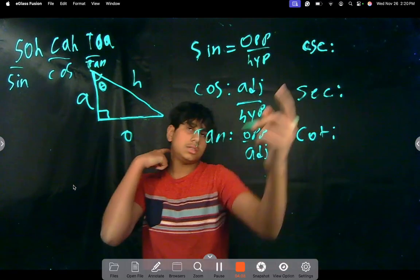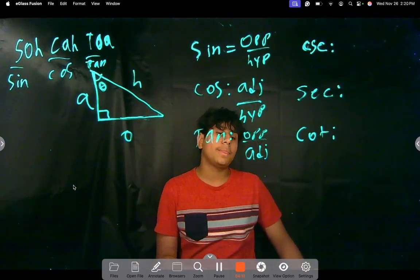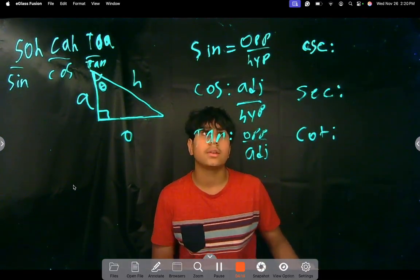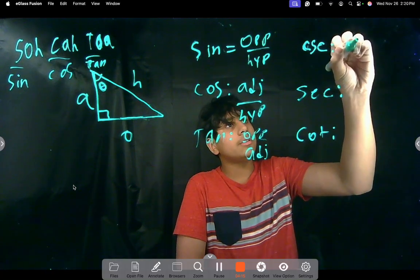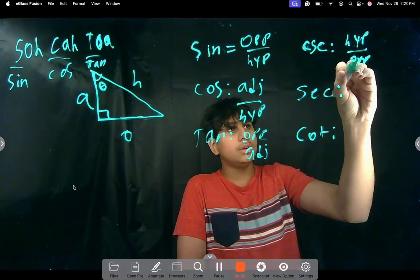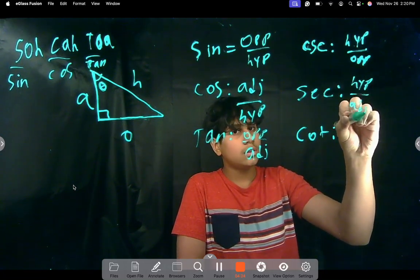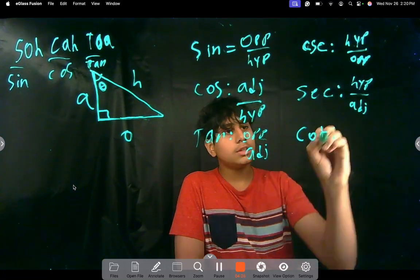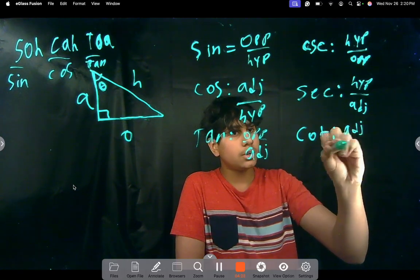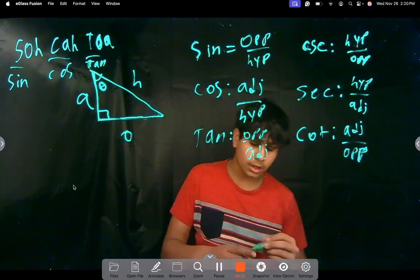So, what are these? CSE is the reciprocal of sine. So, that's gonna be hypotenuse over opposite. Secant is gonna be hypotenuse over adjacent. And then, cotangent is gonna be adjacent over opposite.